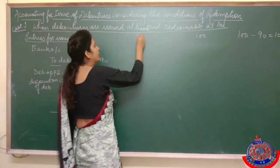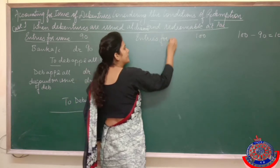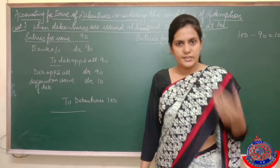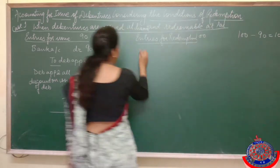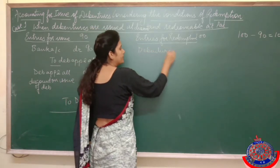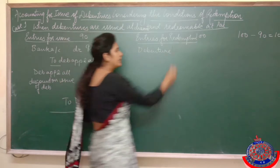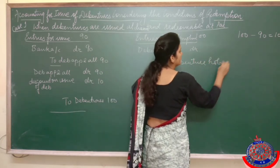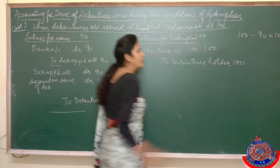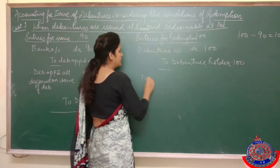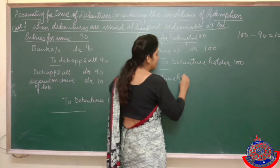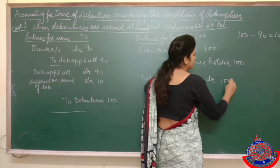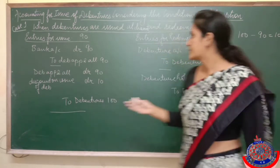Now for the redemption entries: we took rupees 90 but have to pay rupees 100 to them. Debentures was our liability, so Debenture Account debited to Debenture Holder — paying 100. Then Debenture Holder Account debited to Bank Account — 100 goes out.